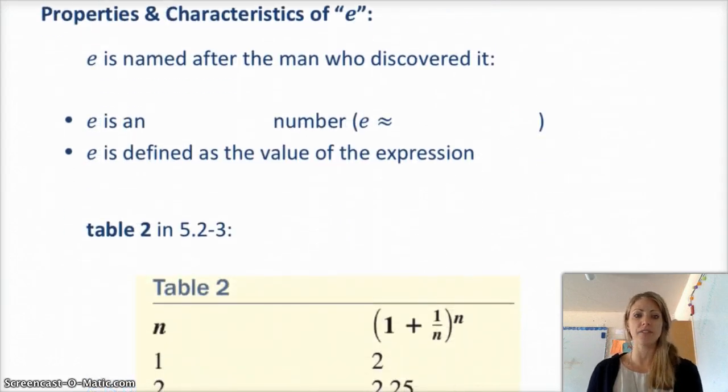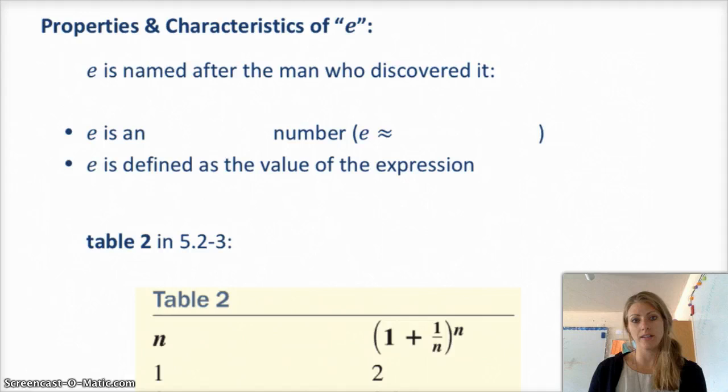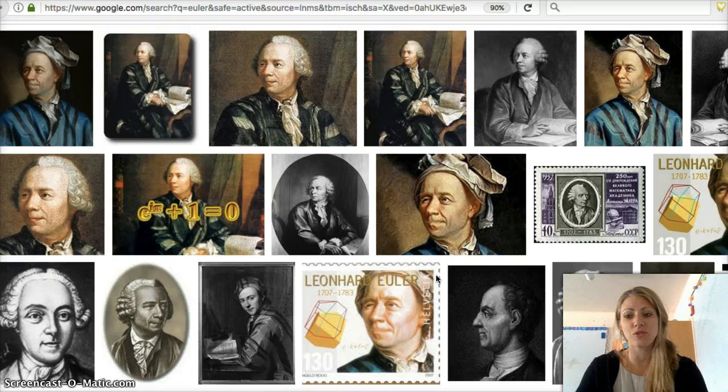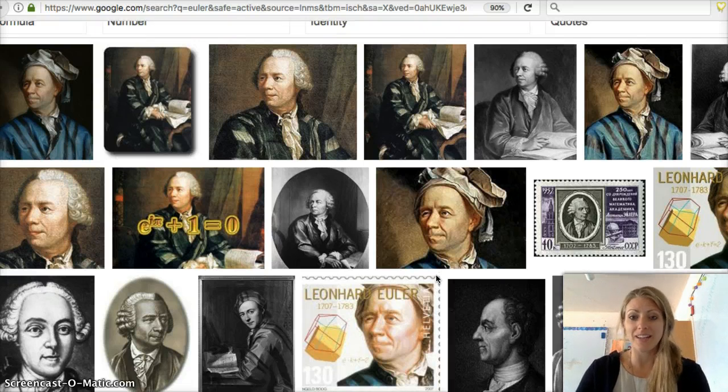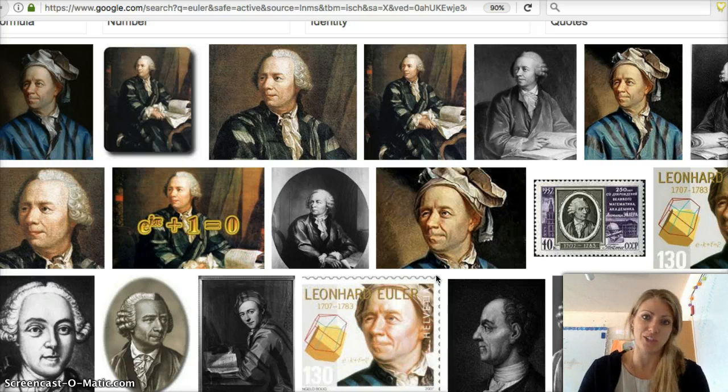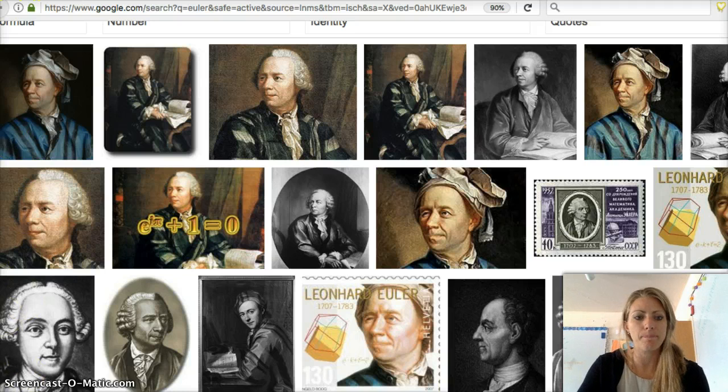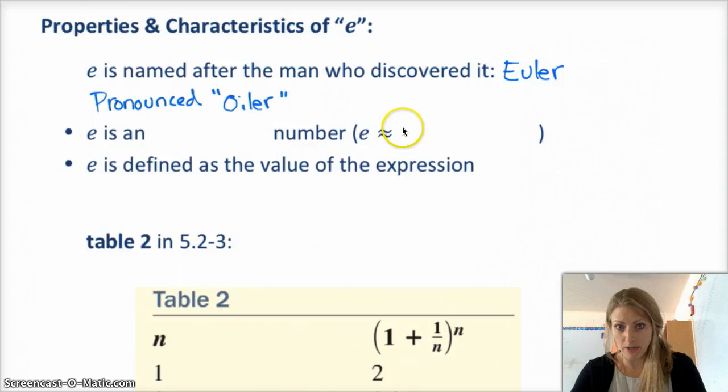And you're going to be seeing a lot of e's, so get used to it. So, we've already been working with them a little bit, so we're going to keep working with them and hopefully make it so it's a little more comfortable for you. Characteristics of e. E is named, the number e, is named after the man who discovered it, whose name is Euler. Spelled E-U-L-E-R, pronounced Oiler. Here's Euler. He really contributed a lot to math, so if you're interested in the history of mathematics, this guy is somebody you should look into, because he discovered a lot of really cool things. One of which is Euler's number, or e.